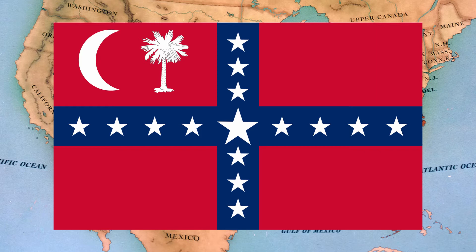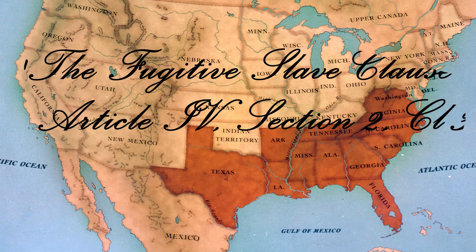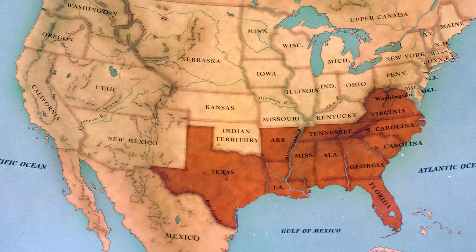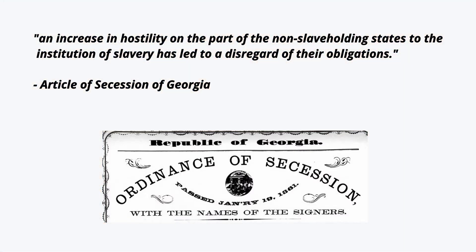Georgia's ordinance stated that each state within the Union had the right to leave if their federal government did not meet its constitutional obligations. Specifically, the Fugitive Slave Clause was mentioned in Article 4, which requires another state to return a fugitive slave who has escaped from their master. It also claimed that an increase in hostility on the part of non-slaveholding states to the institution of slavery had led to the disregard of their obligations.